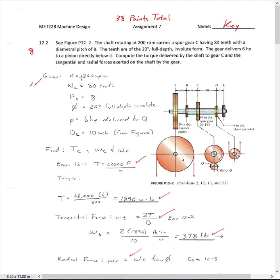Okay, so we're given that the speed is 200 RPM, that the number of teeth in gear C is 80. It has a diametral pitch of 8, and it's a 20 degree pressure angle with a full depth involute form. And the horsepower delivered to Q is 6 horsepower. And from the figure we have here, it's a 10 inch diameter for that spur gear.